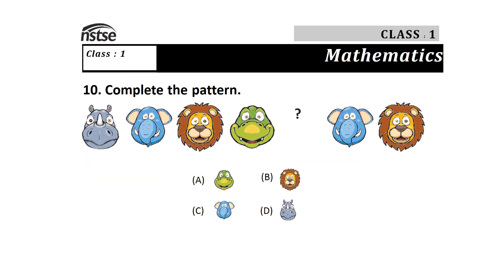Question 10: Complete the pattern. Options are A) frog, B) lion, C) elephant, and D) hippo. Look at the pattern and the series. Before the elephant, there is a question mark. In the answer choices, a hippo comes before the elephant, so the answer is option D.